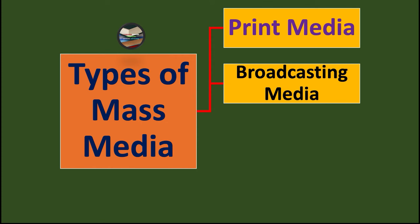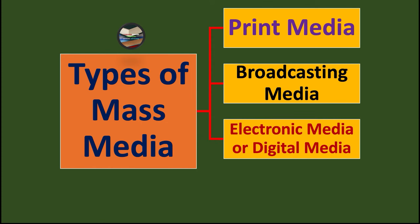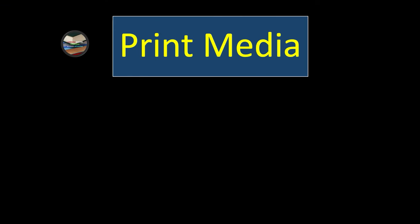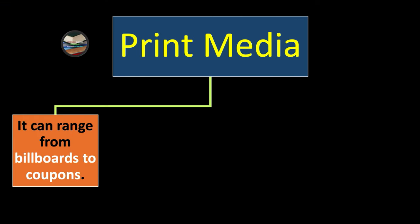The types of mass media are: print media, broadcasting media, electronic or digital media, and outdoor media. Let's discuss each one in detail. Print media can range from billboards to coupons.